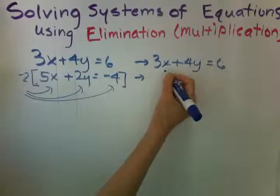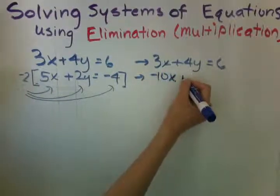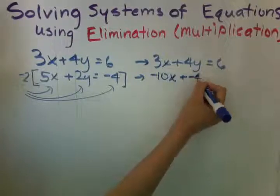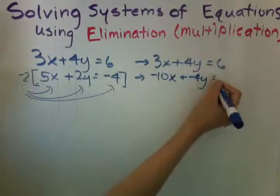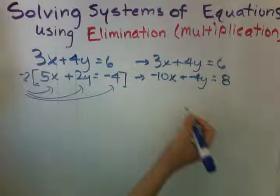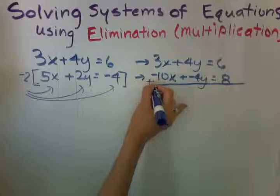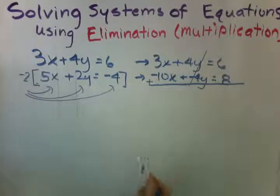We're going to distribute here. Negative 2 times 5x is negative 10x. Plus negative 4y. That was our goal, is to get negative 4y. And then we have a positive 8. And now we can go ahead and add it in order to eliminate the y's.